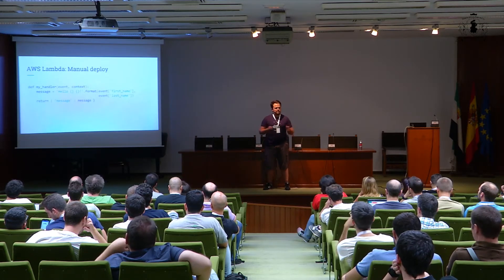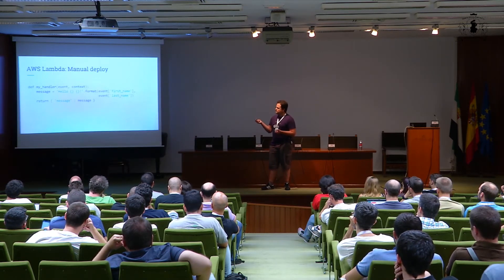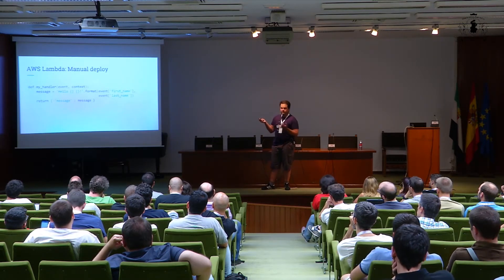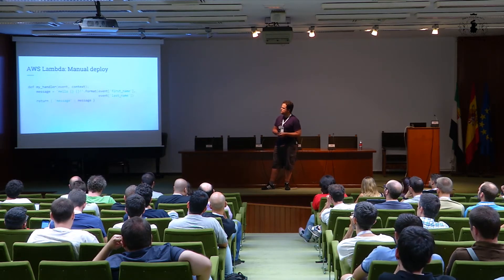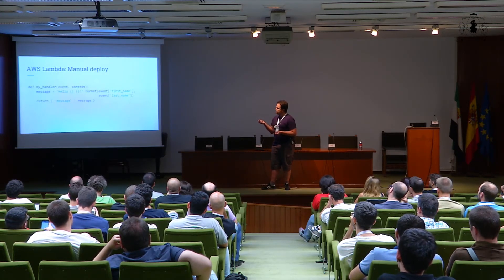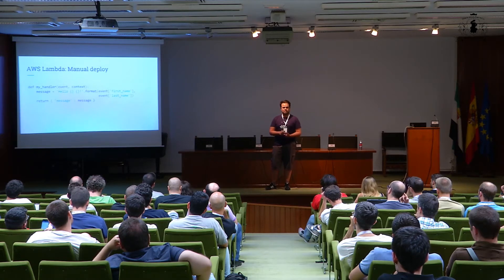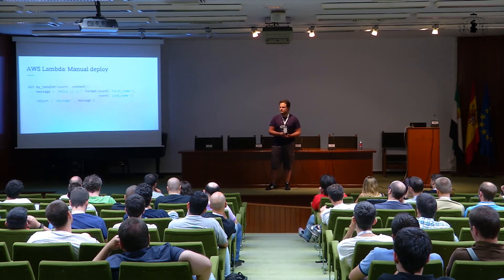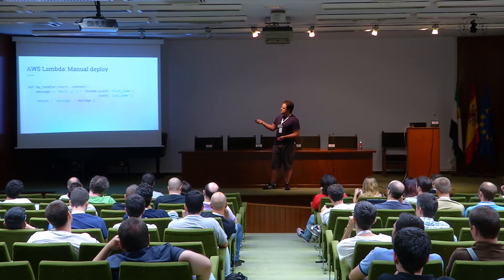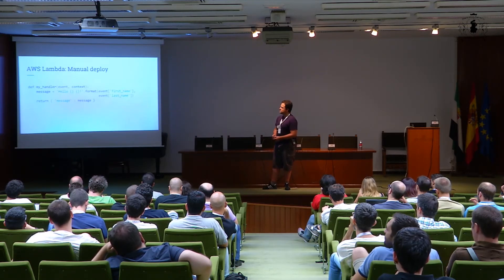Let's say we have overcome these limits and planned our function — what do we have to do to implement it? Imagine we have a module, a hello.py file, and inside we define a handler. A handler is a function with this signature: it receives an event and a context object. The event is a dictionary-like structure that has information about the input event — for example, the parameters it has been called with. The context is another object that has information about the runtime — for example, the remaining execution time or the amount of RAM we have. We can then get the first and last name as input parameters inside the event and construct a JSON dictionary-like message and return it.